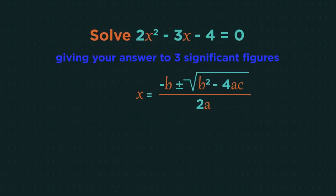Let's have a look at an example. a is positive 2, b is negative 3, and c is negative 4. And so we just substitute these numbers into the formula.